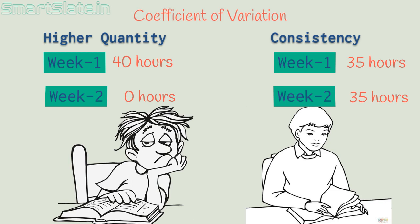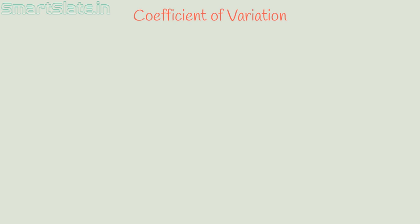Coefficient of variation of data provides you the parameter which determines the consistency. The definition of coefficient of variation is: